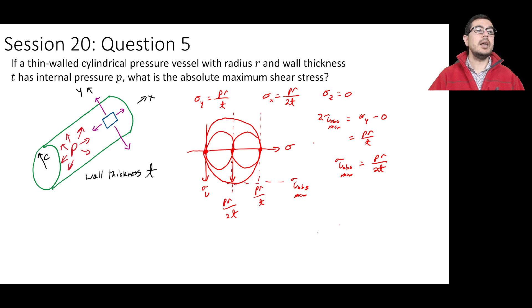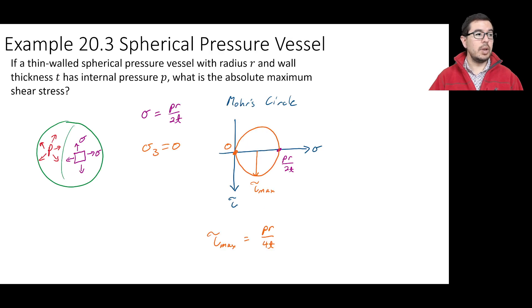And unlike the case where you have the spherical pressure vessel, what we see here is that the absolute maximum shear stress is greater. It's actually twice the value that we had for the spherical pressure vessel. So remember, we drew it as a dot when we were just thinking about the in-plane shear stress,